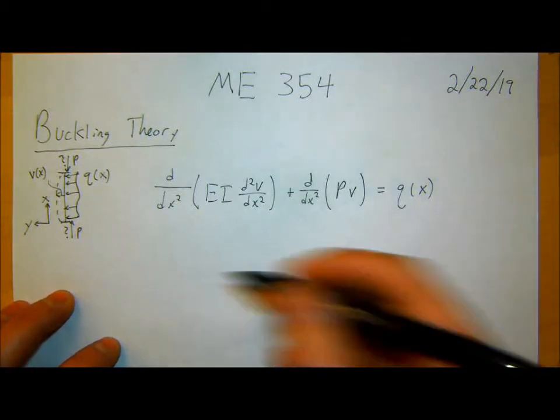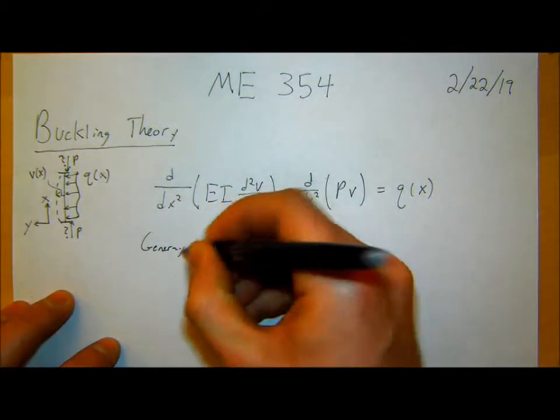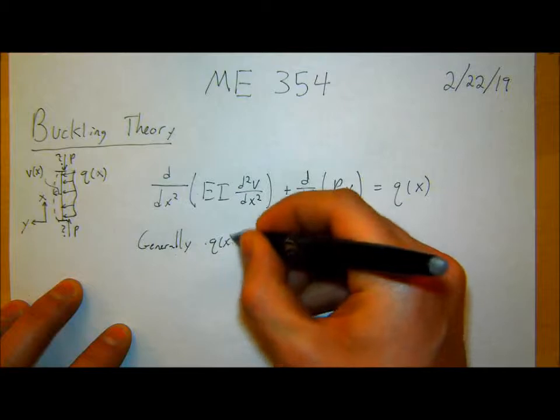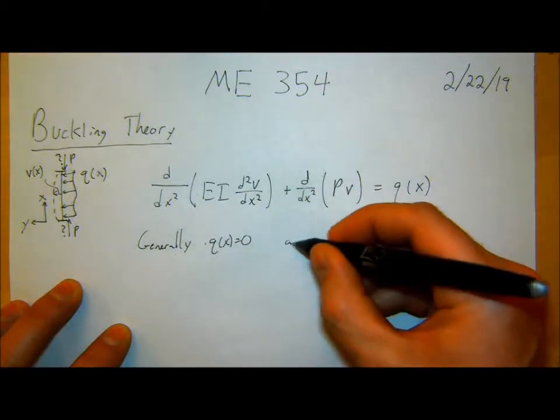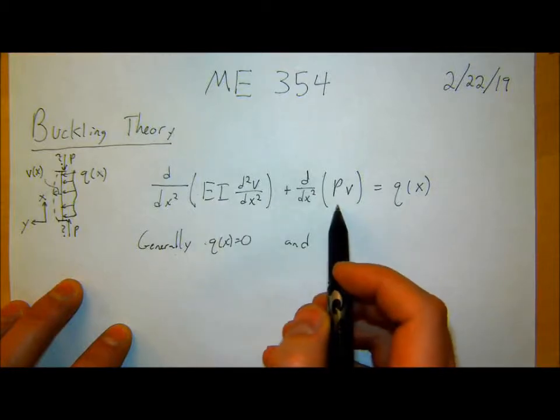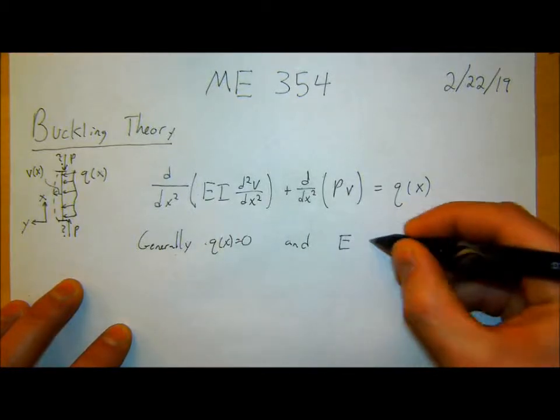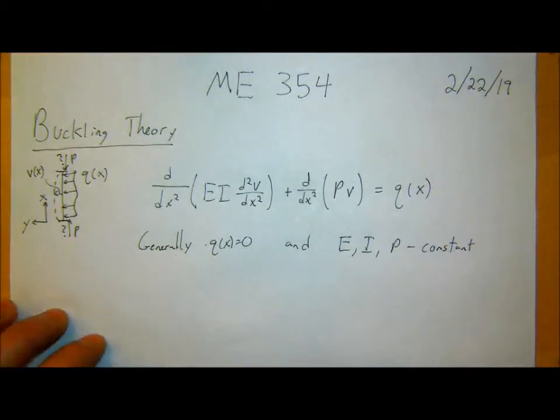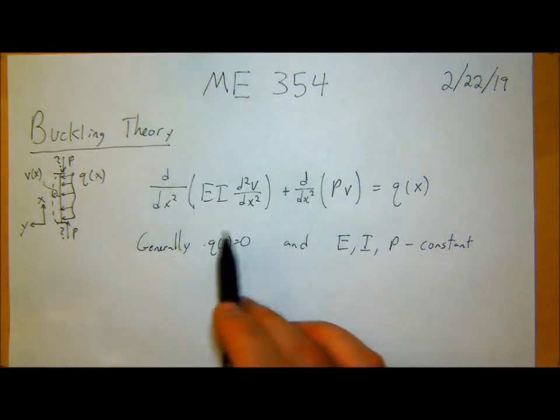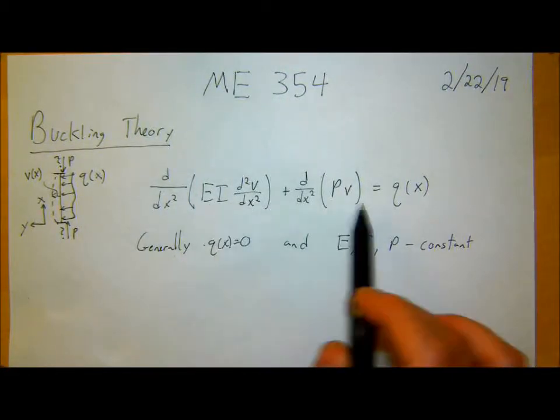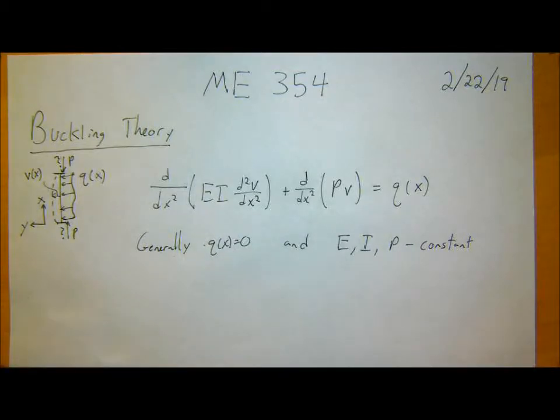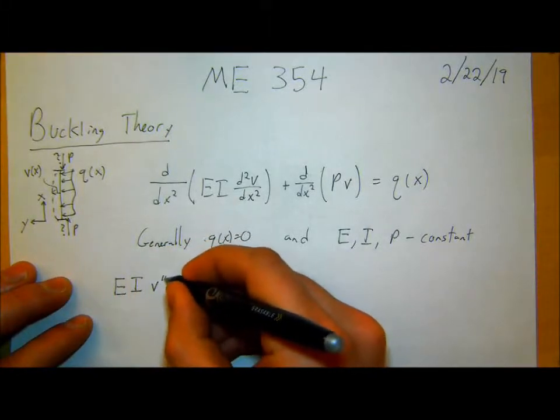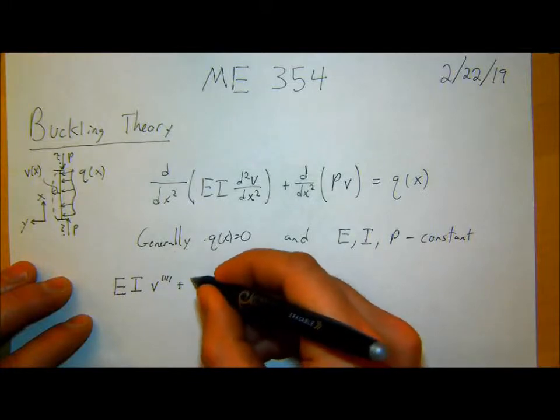This term in here, these two terms EI d²V plus PV, this is our moment term and this is our axial force term. In order to get a fully general case with an arbitrary applied load on the side Q, you take a couple derivatives and you end up with something that looks like this. For the most part, like 90% of the time, 99% of the time, there's no extra applied load to a beam, so generally Q of X is 0, so we're going to ignore that. And E, I, and P are all constants.